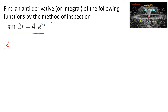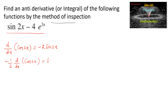By the method of inspection, we know the differentiation of cos 2x is equal to minus 2 sin 2x. So we can write minus 1 by 2 times d/dx of cos 2x is equal to sin 2x, or equivalently d/dx of minus 1 by 2 cos 2x is equal to sin 2x.